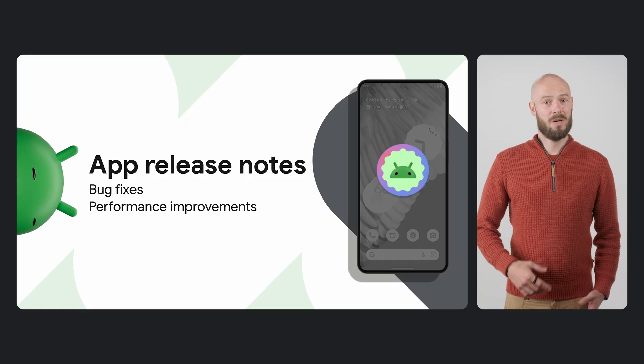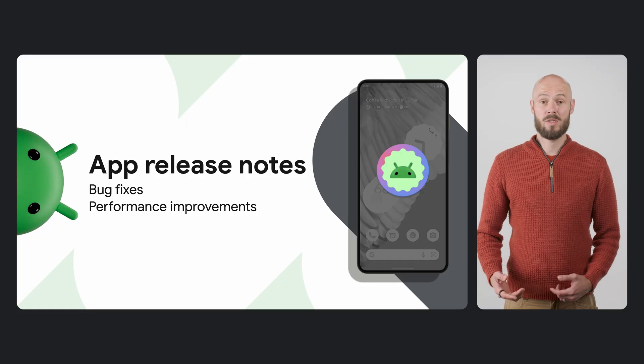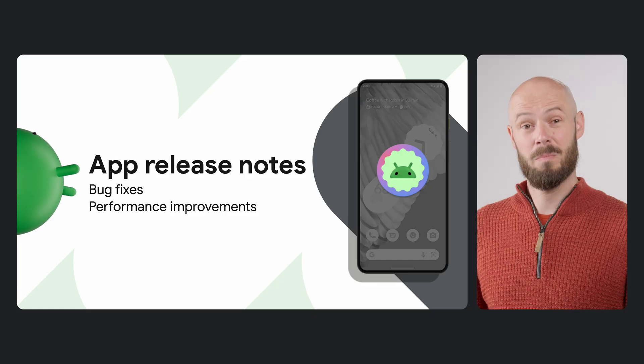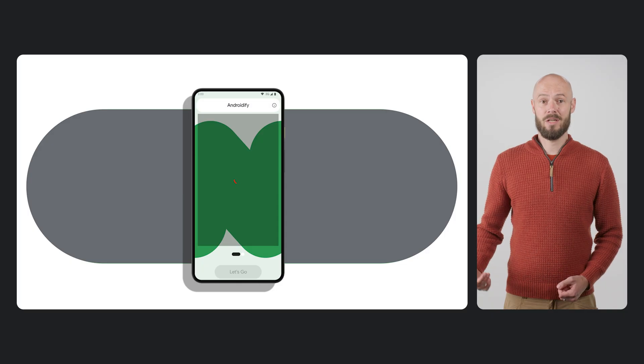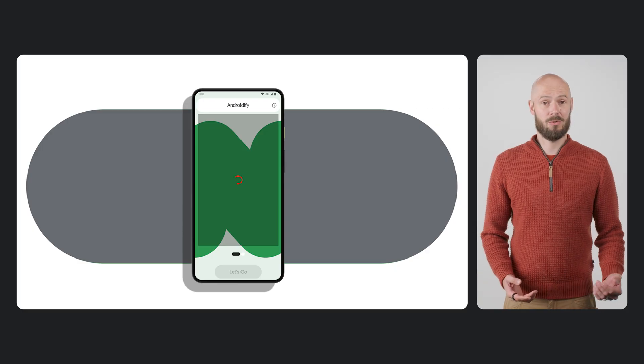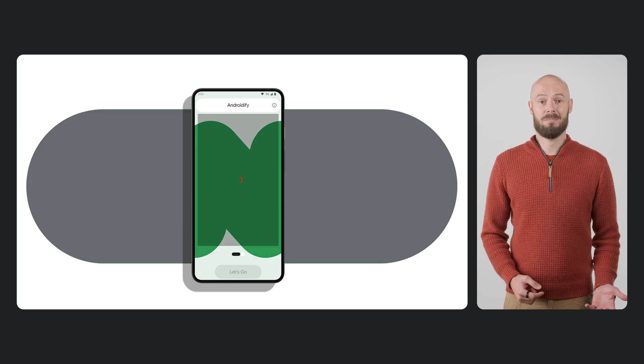Many app release notes simply say bug fixes and performance improvements. But did you really improve performance? It might not be intuitive to prioritize optimizing performance over writing the next hot feature, but when that new feature takes a long time to load or is slow to render, your users can become frustrated. And unhappy users are more likely to abandon the feature you spent so much time on.